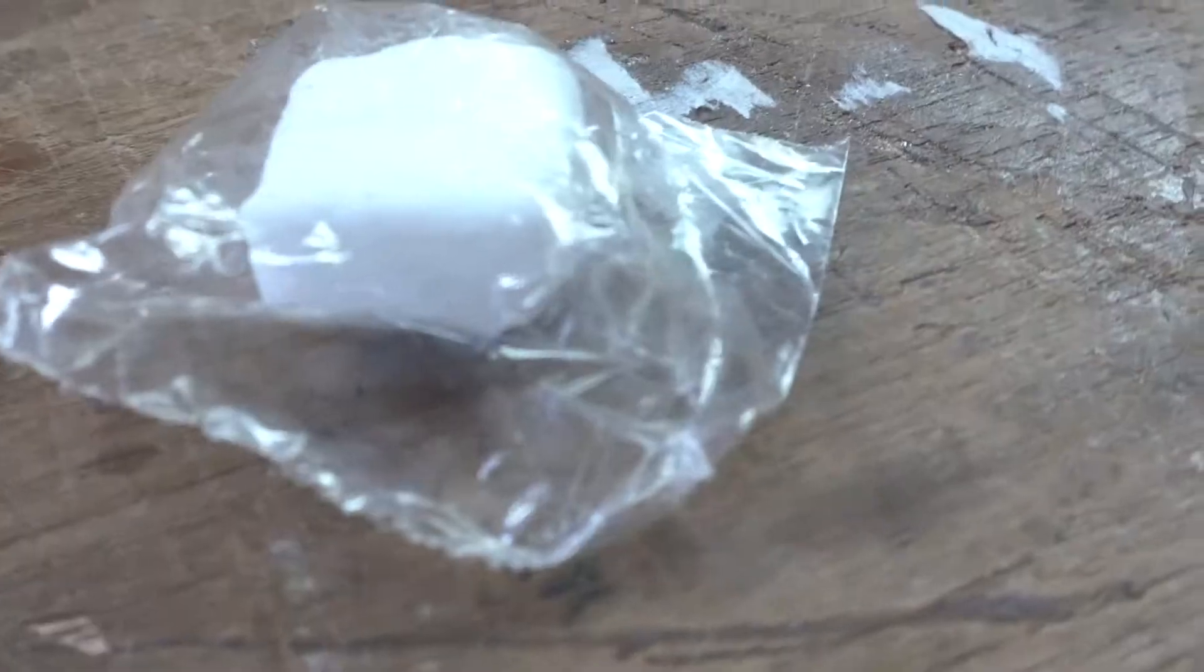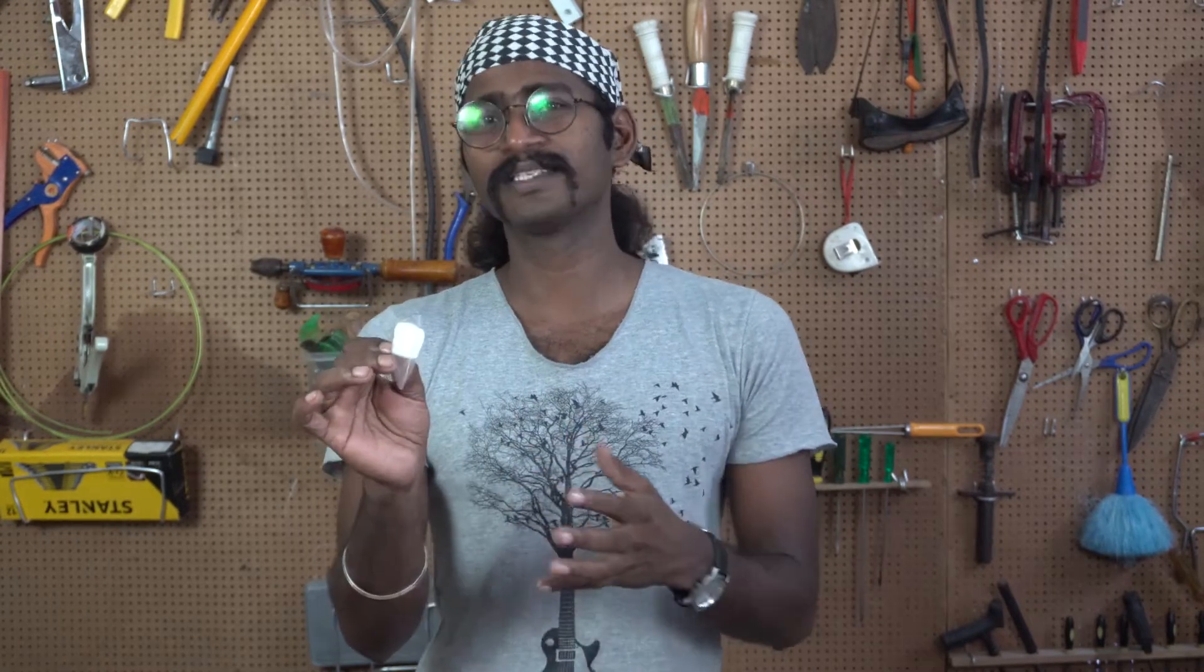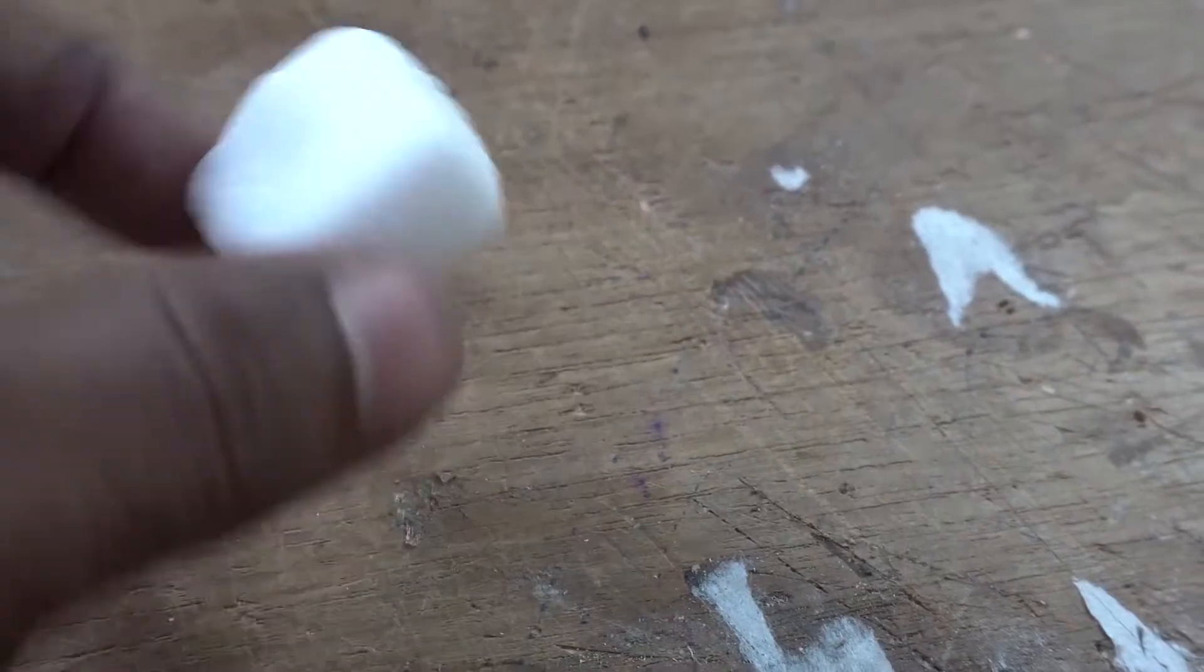Now this my friends is called camphor. It is a very common thing in Indian households and the cost of this particular piece is one rupee. One Indian rupee and this is way too much for this activity. You just need a little bit so want one of these.